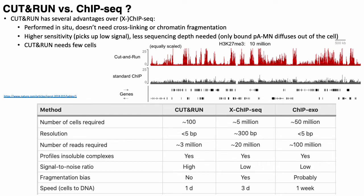Newer versions of the cut-and-run protocol don't even need you to isolate nuclei in the first place. At the end of the day, cut-and-run currently only requires around 100 cells if you're trying to assay histone modifications and around 1000 cells for transcription factors, which is obviously much better than classic ChIP-seq where you might need up to millions of cells for input.